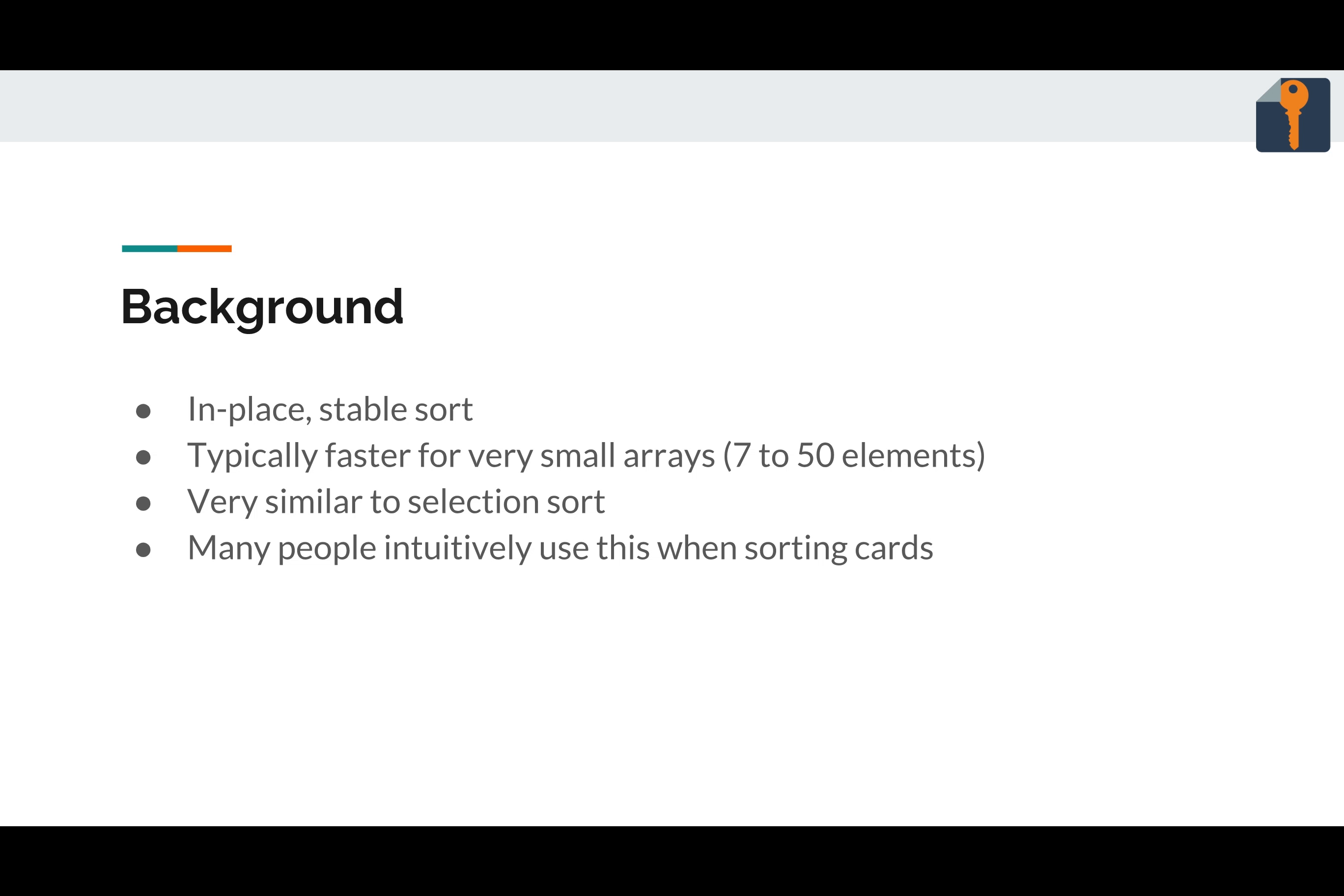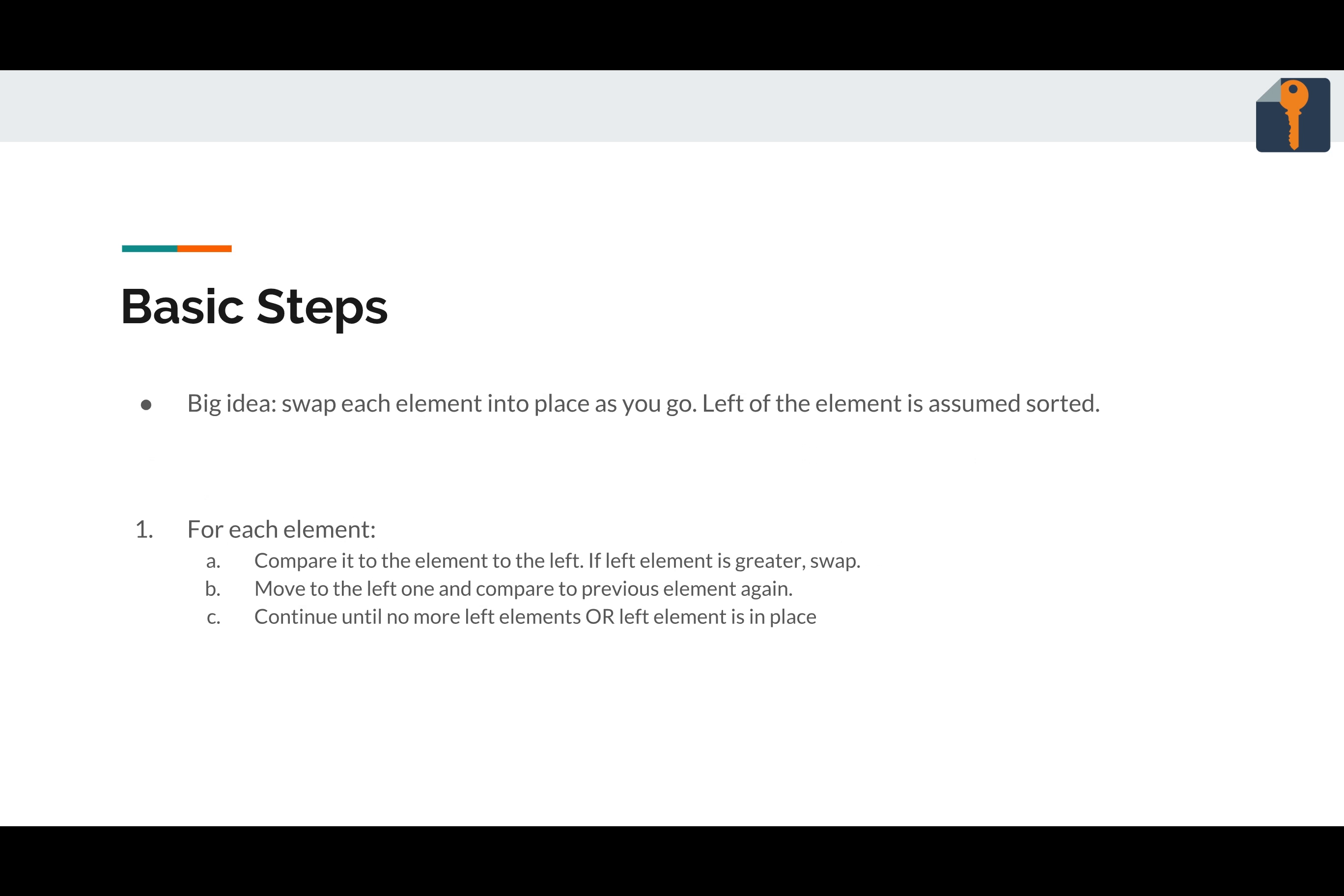And another thing to note is that this algorithm is used intuitively by people sorting cards. So if you're sorting cards, just pay attention next time you do it. You might find yourself using insertion sort. Basic steps. So the big idea is we're going to swap each element into place as we go, and left of the element is assumed sorted. So we're going to have part of the array that we've already gone through. And it's basically just picking the card out and putting it in the right place on the left hand side where we already have our sorted array growing until we have everything sorted.